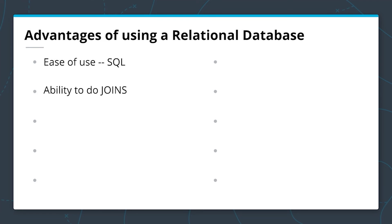Next is the ability to do joins. That's one of the reasons we'd want to use a relational database — the ability to do joins, combining more than one table on a common key to get more information. This is something that is unique to relational databases and makes it very powerful.